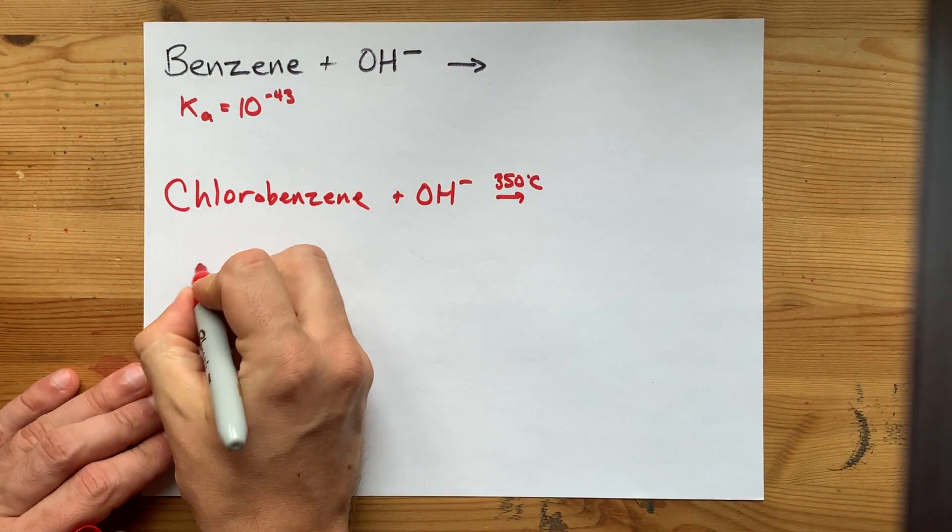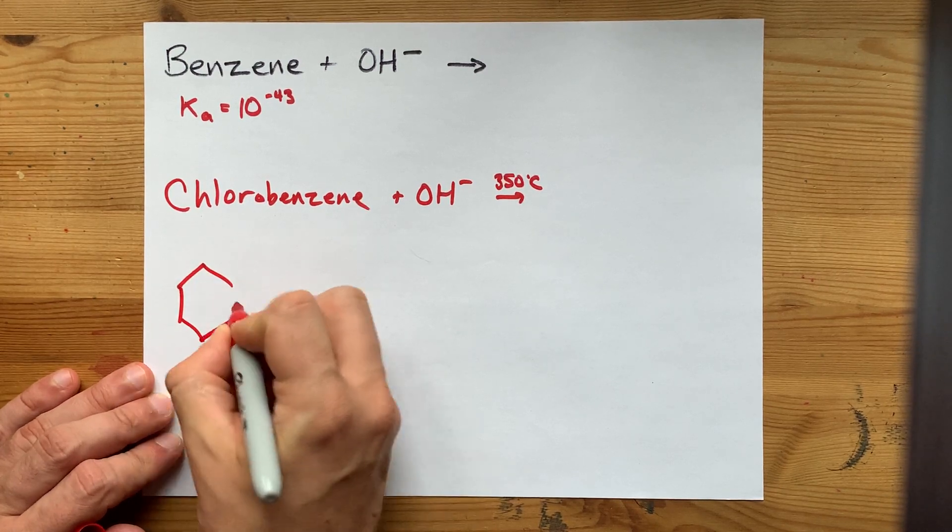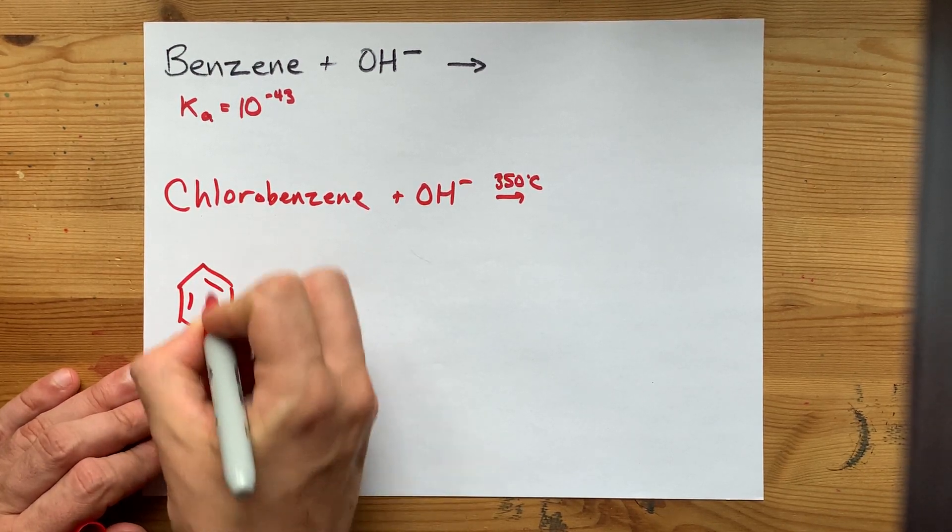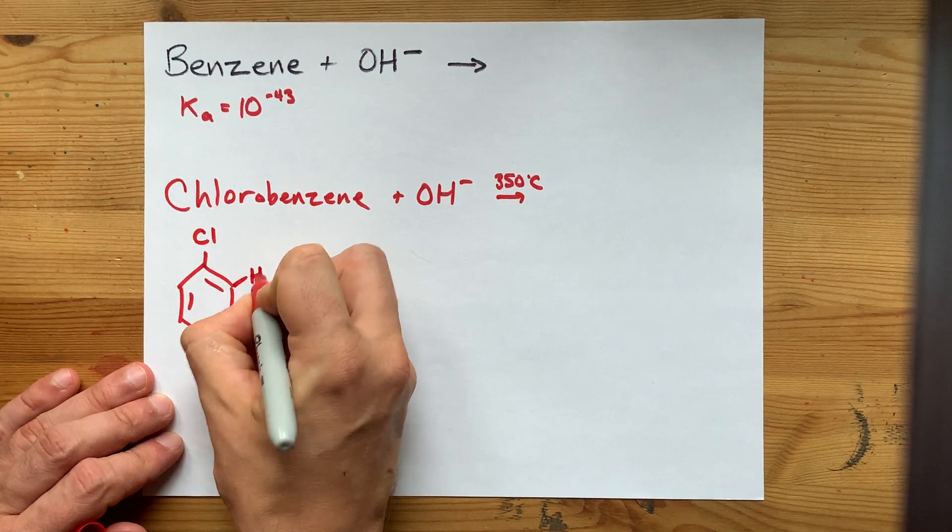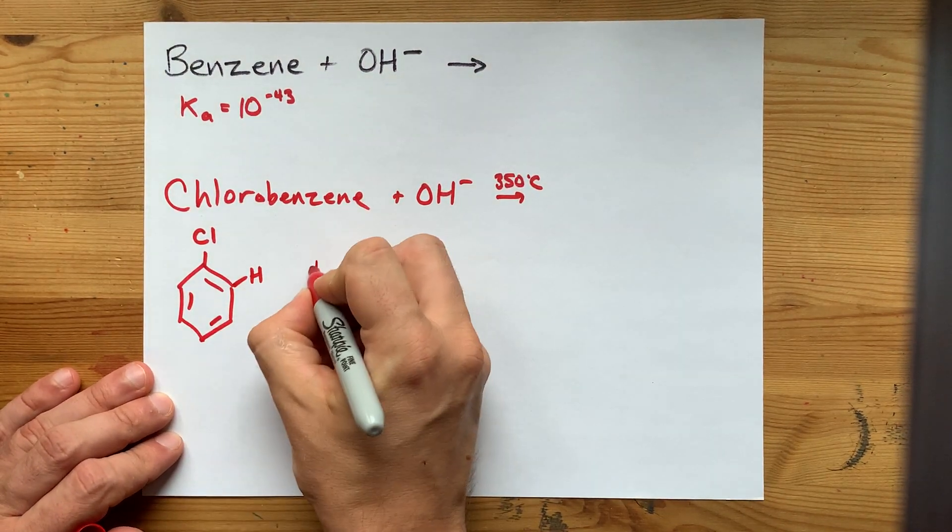Now, the way that that happens is, let me just draw a chlorobenzene here. We've got a chlorine, and we also have an H here.